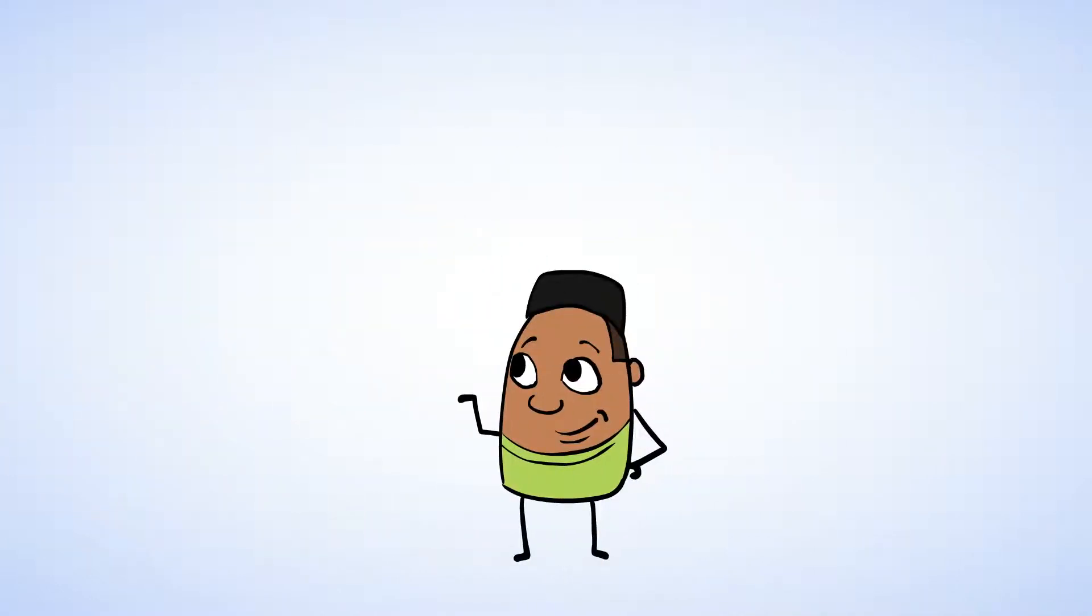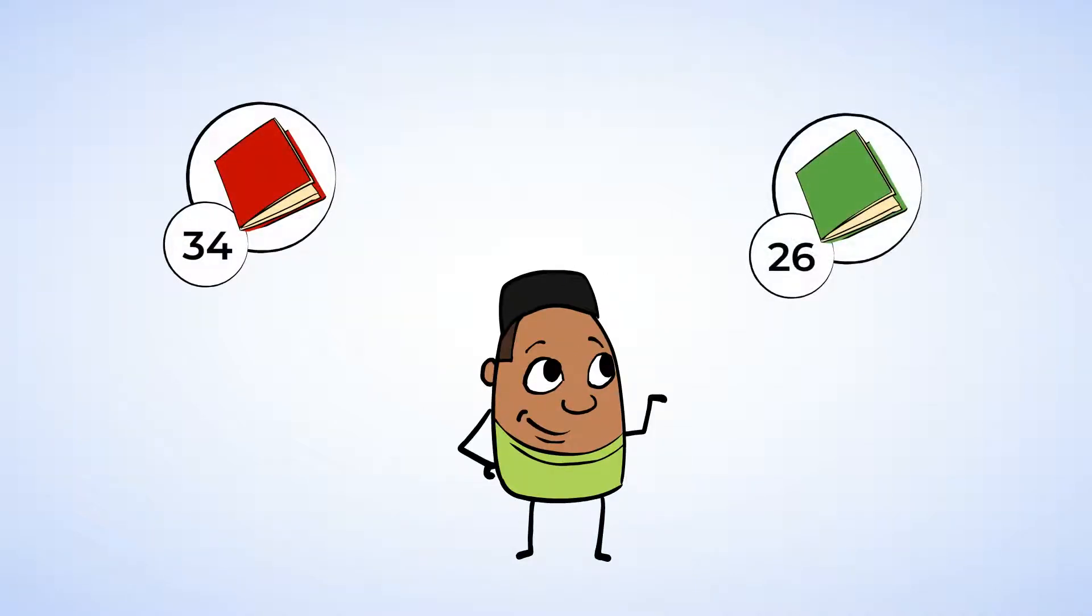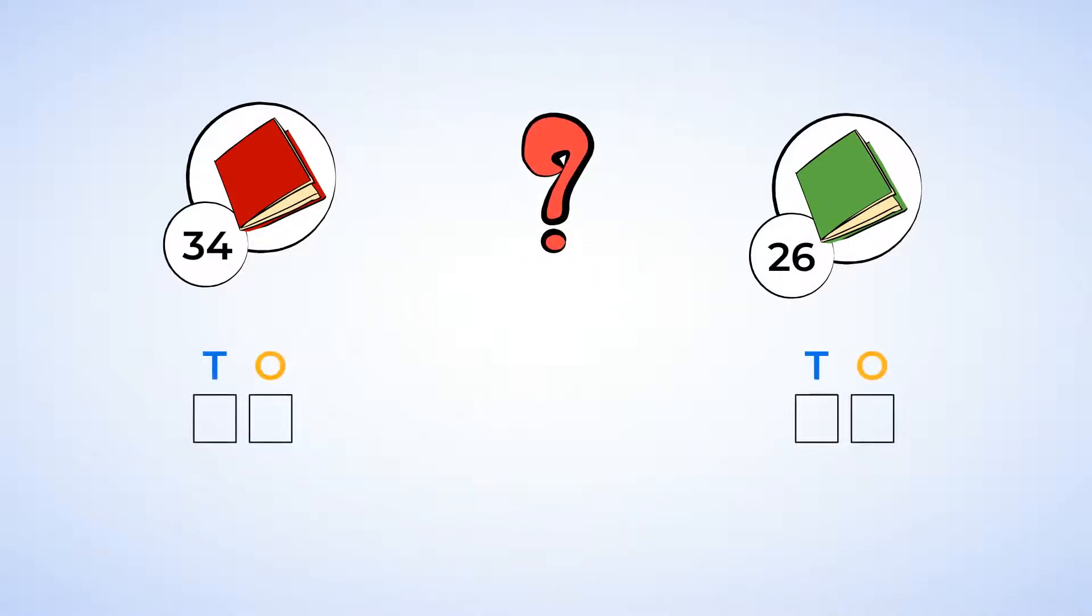Let's get back to the books though. So, one book has 34 pages and the other has 26 pages. Which book has more pages? We can use a place value chart to help us. A place value chart shows us how many tens and ones a number has. Let's put the numbers 34 and 26 in a place value chart.